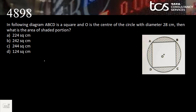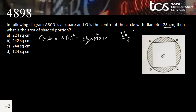The next one is the most peculiar — an old-school figure-based mensuration question. ABCD is a square, O is the center of the circle, and the circle is touching all four corners of the square. The diameter of the circle is 28 centimeters. What is the area of the shaded portion? First, the area of the circle: π r² with radius 14 gives 22/7 × 14 × 14 = 616 square centimeters.